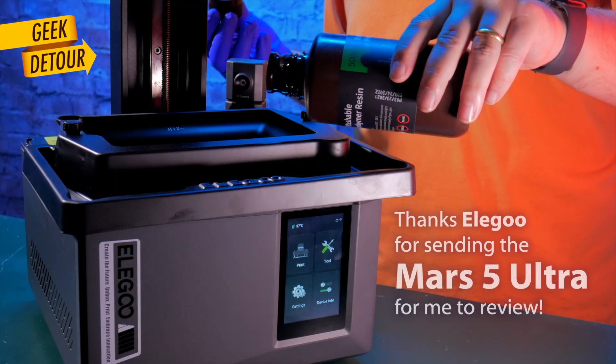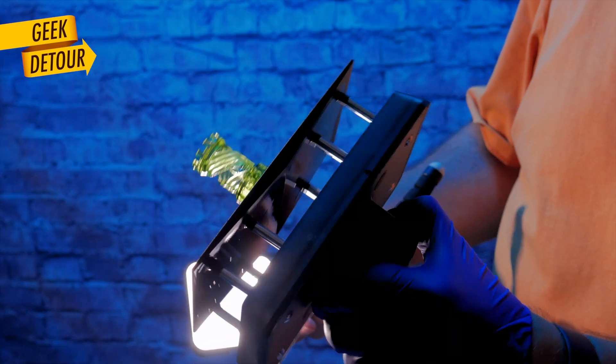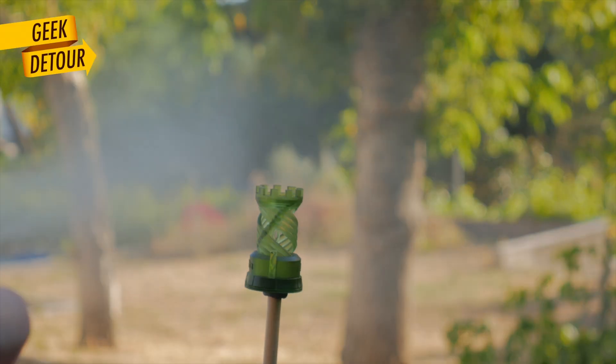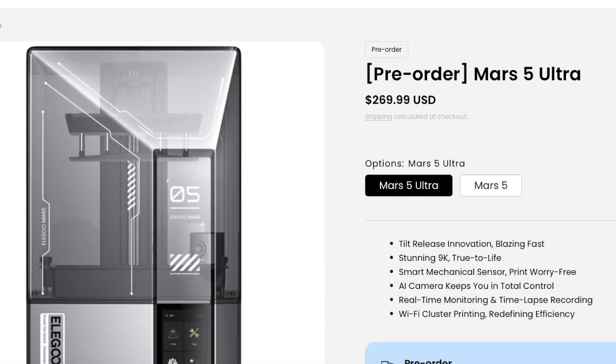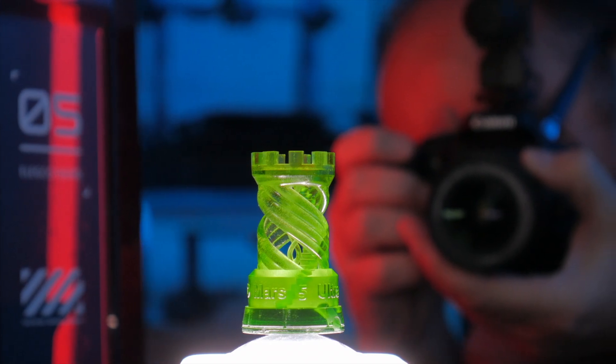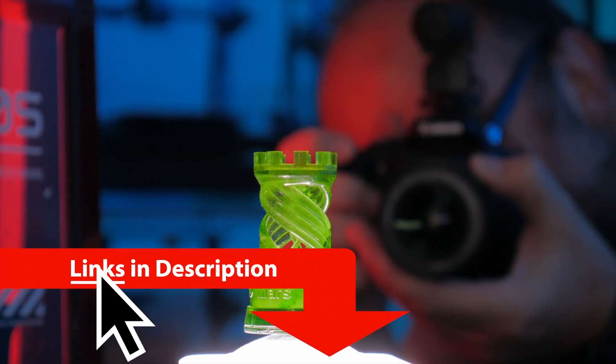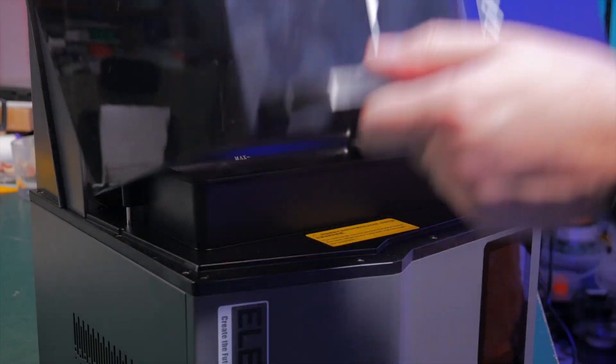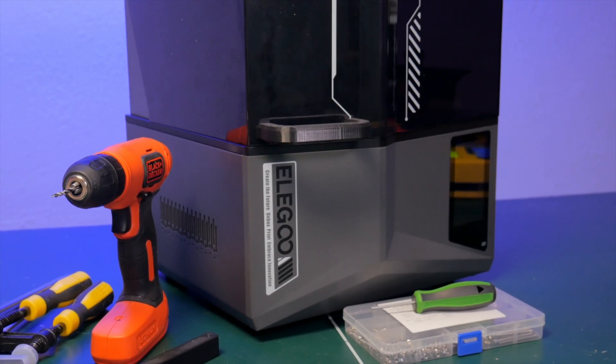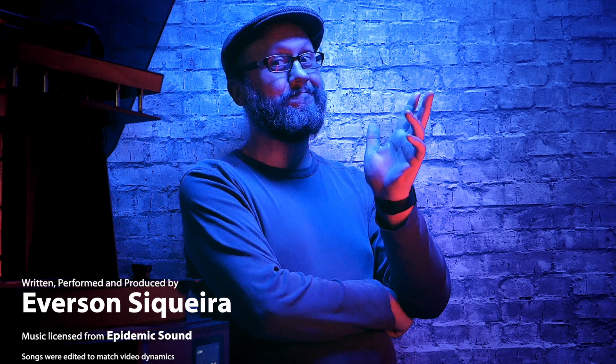The Mars 5 Ultra is very easy to use, the best resolution for jewelry makers, and to print miniatures. It's an excellent price, and if you like my work, please use my affiliate links. It is the same price for you, and it brings food to my table. And here is my review of the Saturn 4 Ultra, the big brother, and I'll see you on the next video.